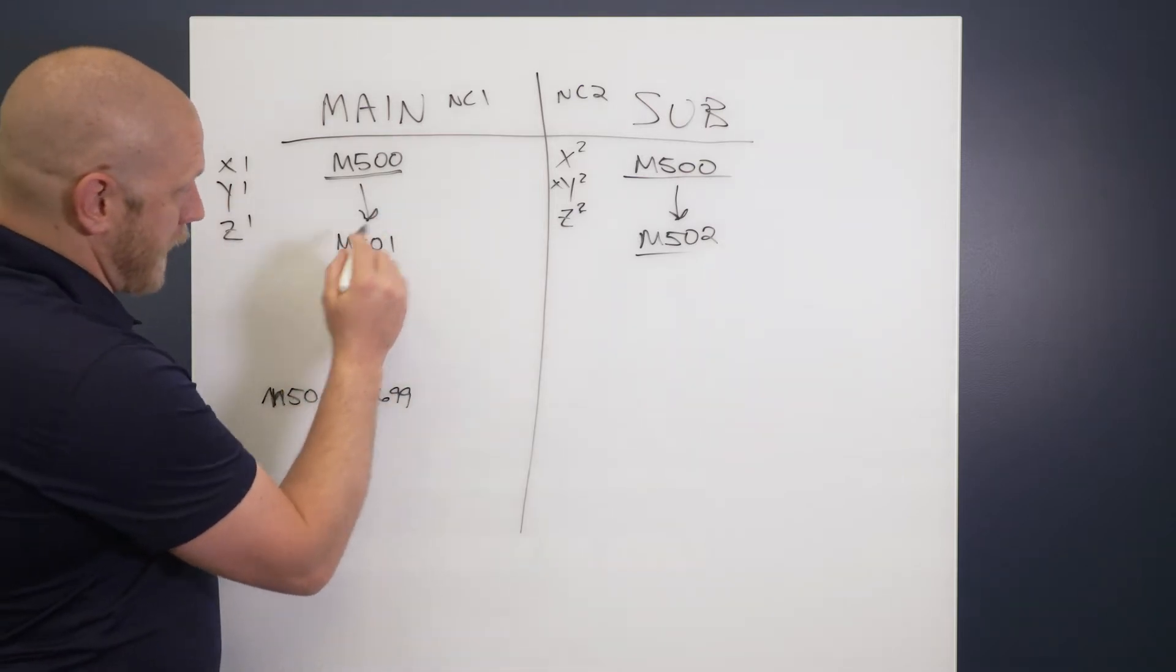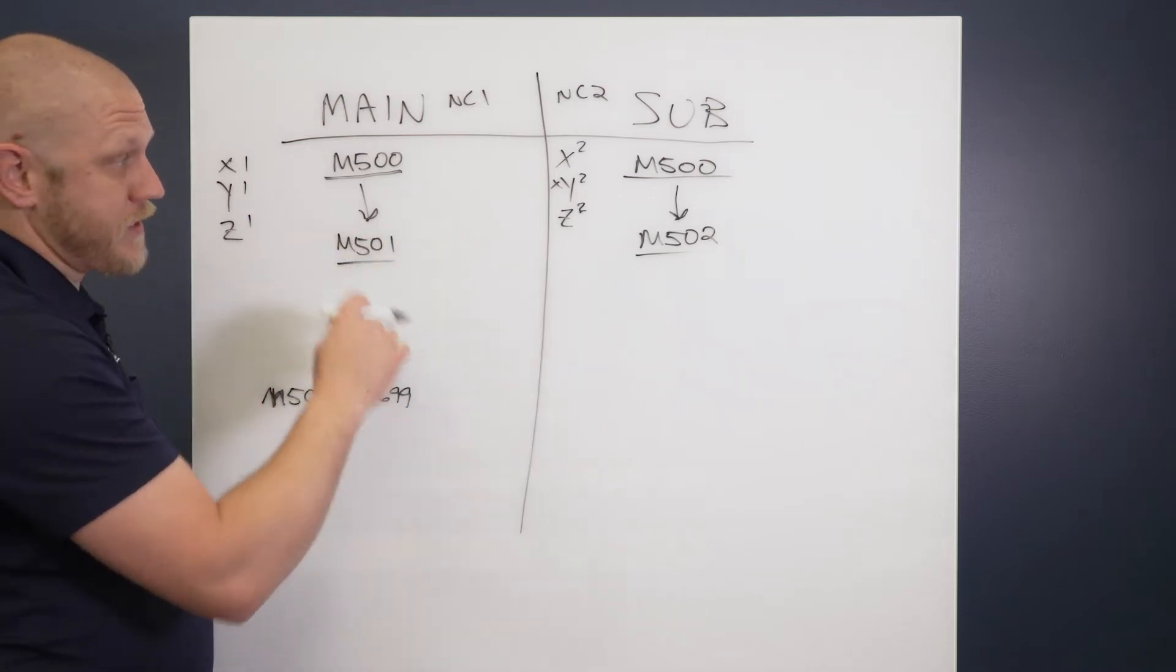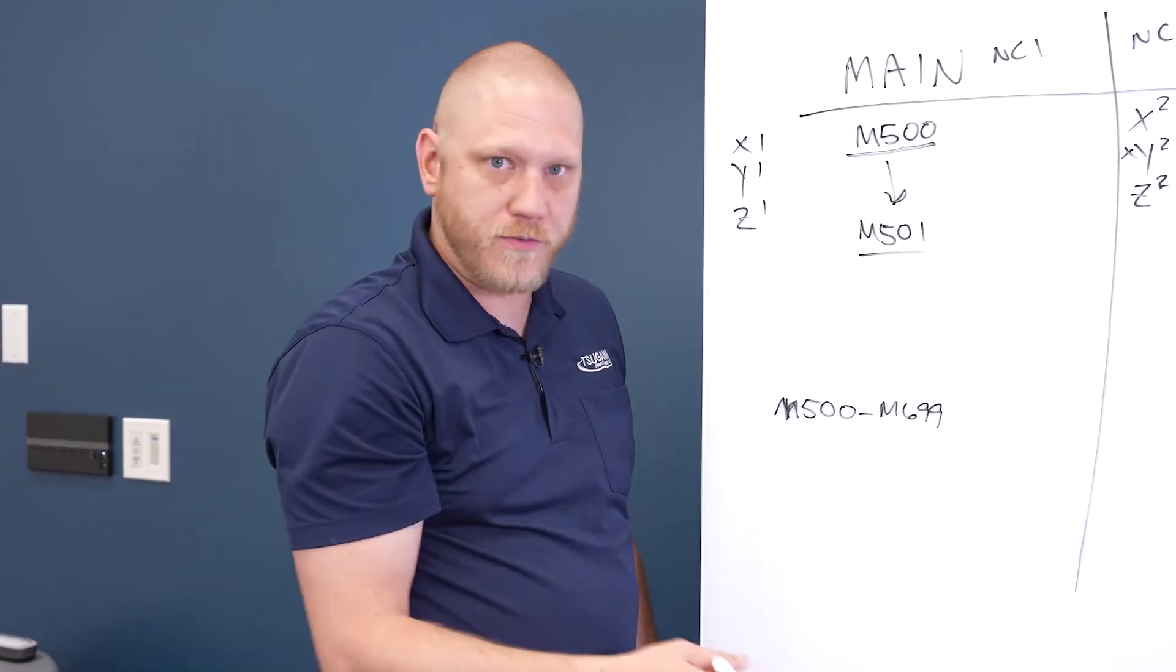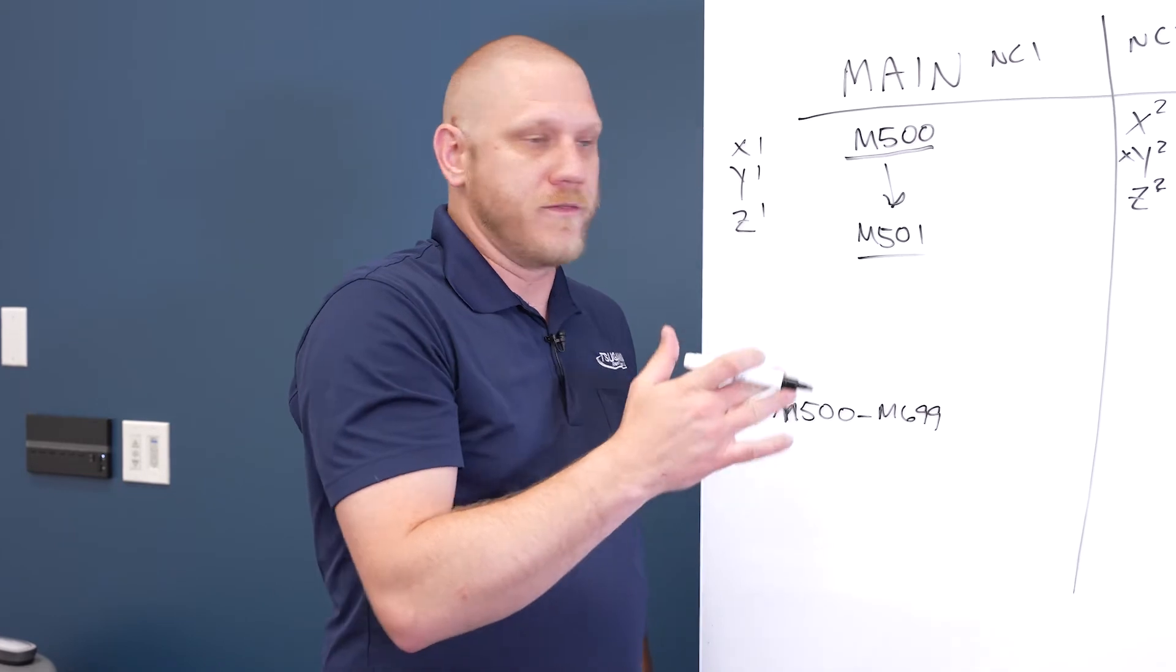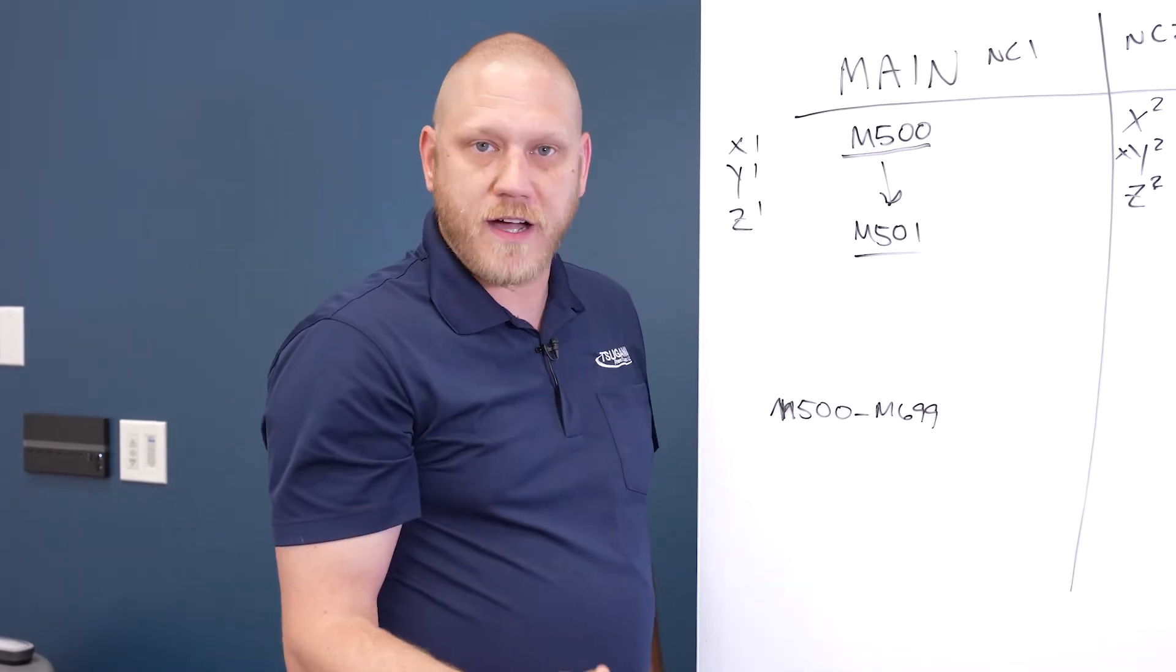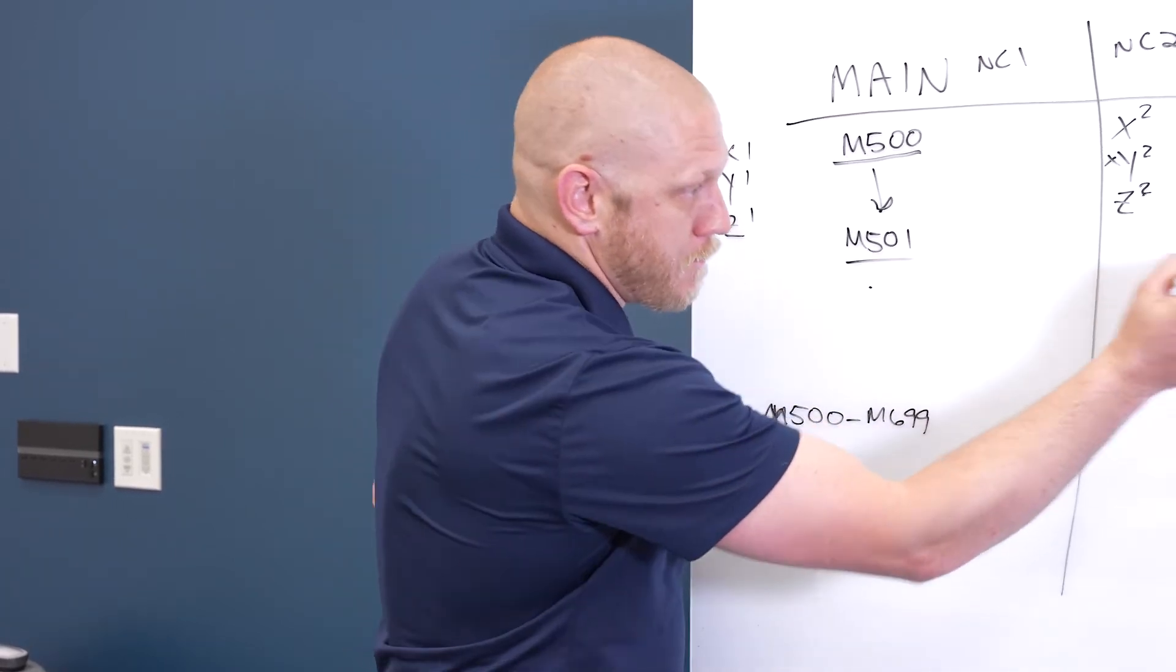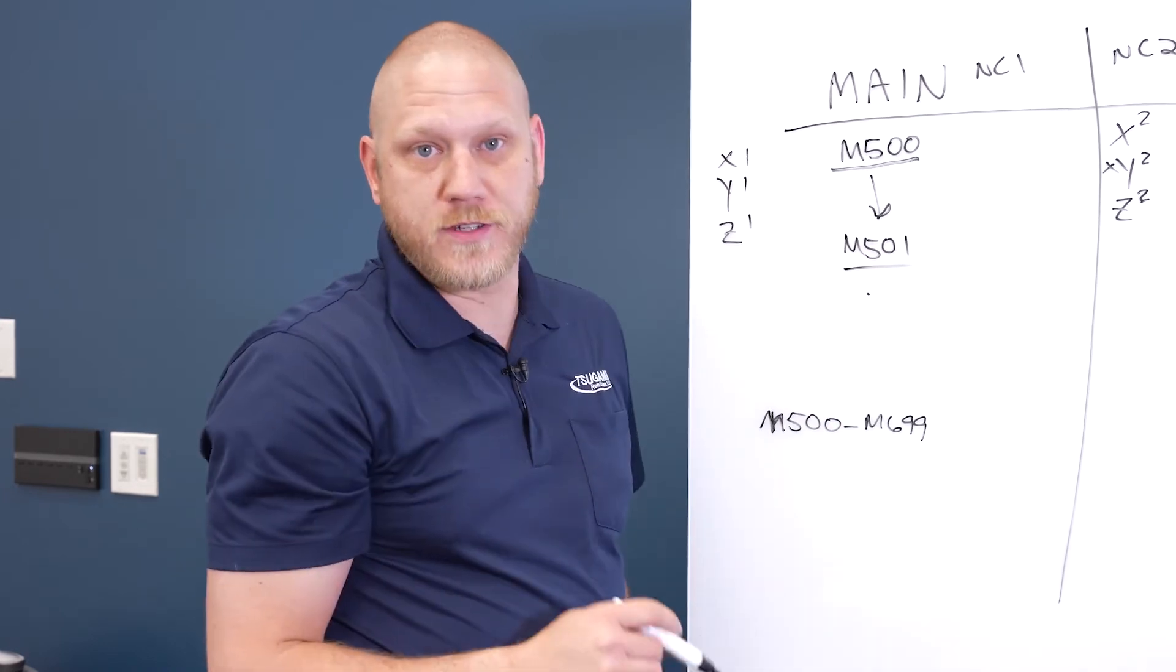That's how a two path weight code system works. And you can go in any order. It does not have to be in numerical order. You don't have to say M500, M501, M502, M503. You can skip around, you can go to M650, you can go to M550, and then the next one's M585. It doesn't matter what order you put it in as long as they match from path to path. That's how weight codes work on a two path control.